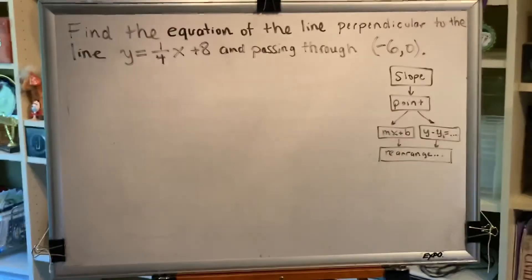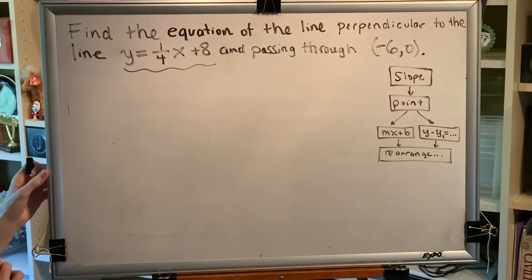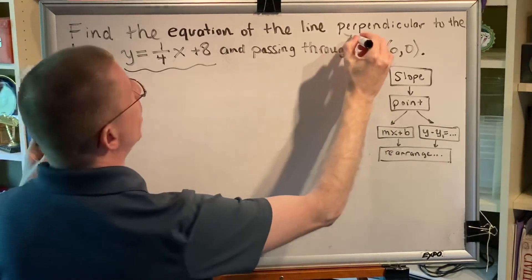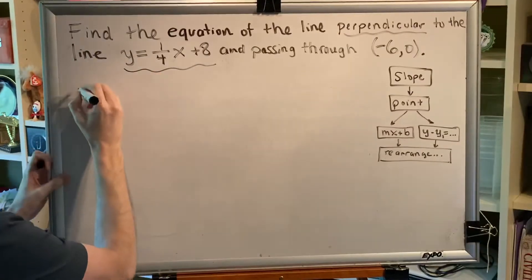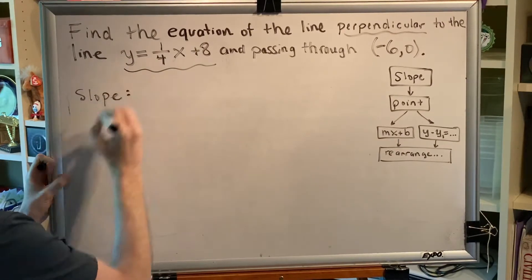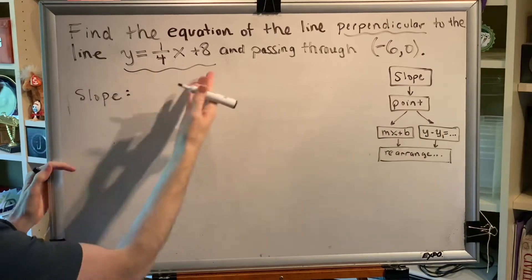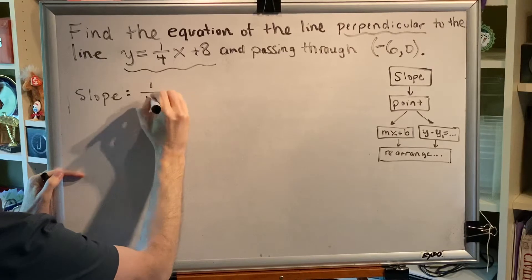The line that we have been given is this, and the line we have been asked for needs to be perpendicular. So we need to find the slope of the given line, which conveniently has been provided in slope-intercept form and therefore can be read from the equation, 1 4th.